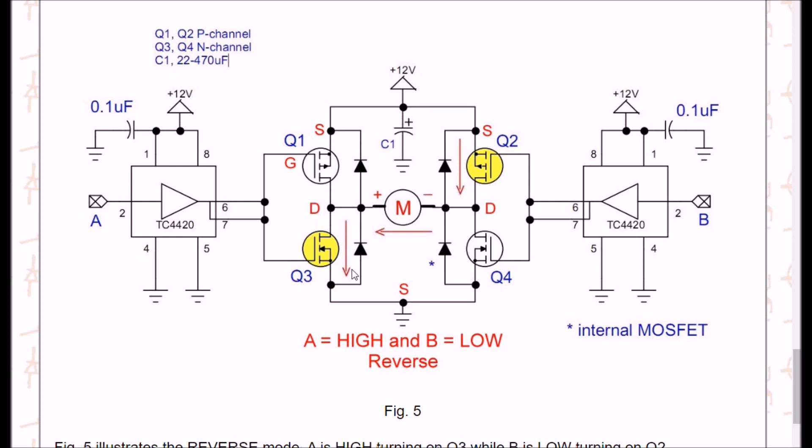We establish a current path through Q2, through the motor, to ground through Q3. The current now is going in the opposite direction from before, and we will call this reverse.